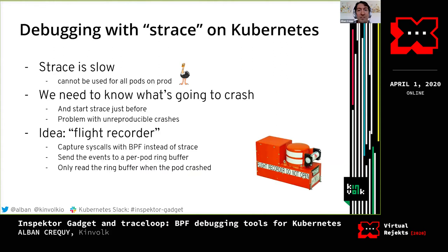The use case I focused on is the Strace user experience. As a developer, I really like to use Strace to debug my application when something crashes, to see the system calls and what it's doing. Strace has a problem on Kubernetes — it's not really possible to use Strace for all your processes, all your pods on Kubernetes all the time in production because it would be too slow. One annoying use case is when something crashes in Kubernetes and the process is not there anymore. It's not possible to attach Strace on it anymore — it's too late. And with unexpected crashes, it's difficult to know in advance what's going to crash.